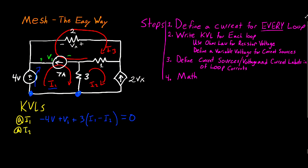For the I2 loop, starting here and following the path of I2, the first thing we see is the 3-ohm resistor. Because we're in I2's loop, I write I2 minus I1, which gives the net current with positive polarity in this direction. The next component is the 1-ohm resistor: plus 1 times (I2 minus I3). Now we've reached a dependent current source — we don't know the potential across it, so we define plus-minus V2. As I2 reaches that source, we see the positive side of V2 first, so we write plus V2, and set the loop equal to zero.